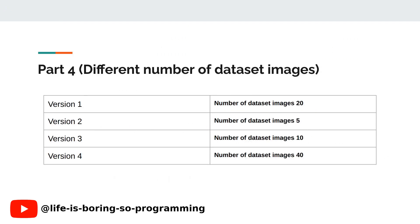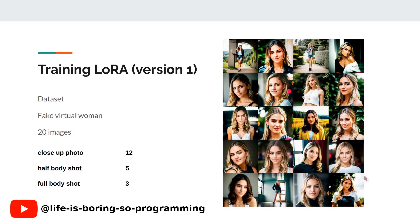In this experiment, we will compare 4 different versions. Version 1 is the normal training dataset with 20 images. Version 2 has only 5 training dataset images. Version 3 has 10 training dataset images. Version 4 has 40 training dataset images.